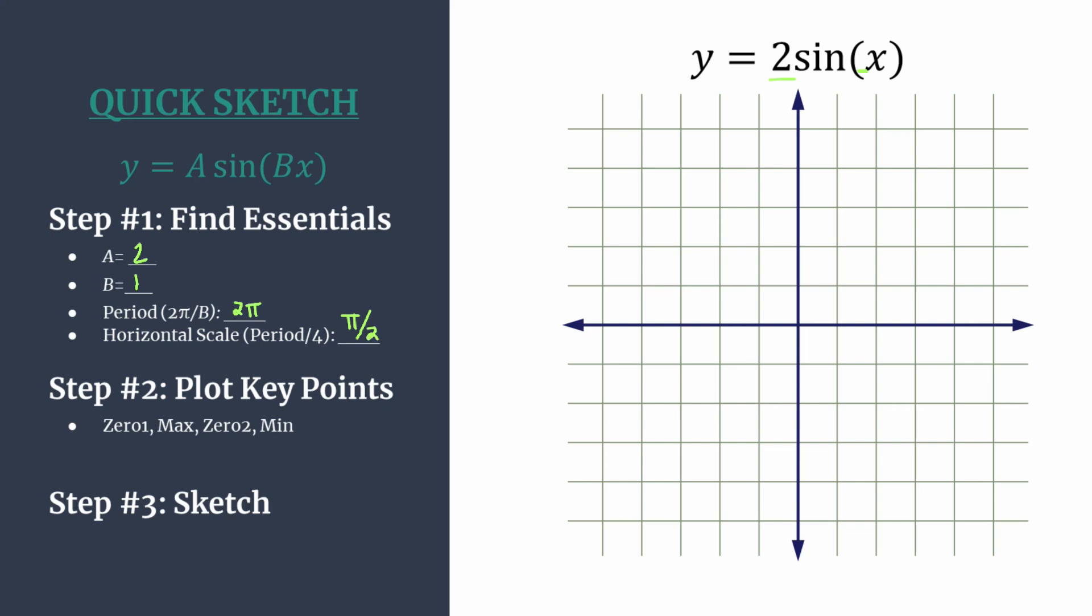Let's go ahead and label our horizontal axis. So one pi over two, two pi over two of course reduces to pi, three pi over two, and then four pi over two reduces to two pi. This fourth tick mark should always match our period if we do it this way.